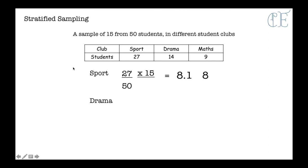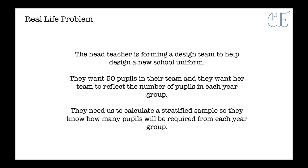So then for drama we have 14 students out of a total of 50. Times that by our sample size gives us 4.2 or 4. And finally for Maths, we have 9 students out of 50. Times that by our sample size of 15 gives us an answer of 2.7 or 3 students. And that's how you would find a stratified sample from that.